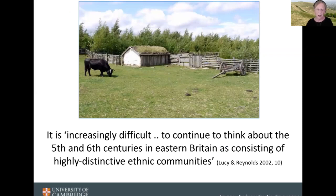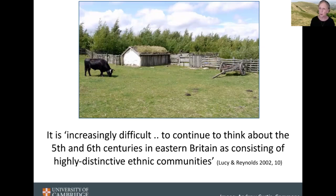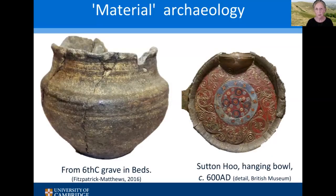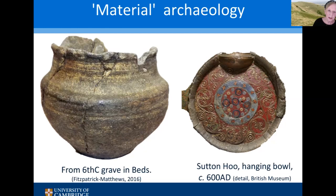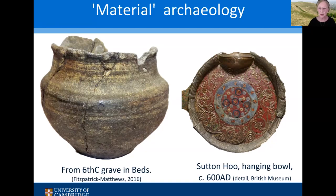Dr. Sam Lucy and Professor Andrew Reynolds wrote a book on this around 2000. They say it's increasingly difficult to think about the fifth and sixth centuries in Eastern Britain as consisting of highly distinctive ethnic communities. People were assimilated into local communities — they weren't a group of Northwest Europeans in one village and a group of Romano-Britons in another. People lived together. In the material archaeology, there's supposed to be a complete break between late Roman Britain and the early medieval period, but increasingly evidence shows there was continuity as well as change.